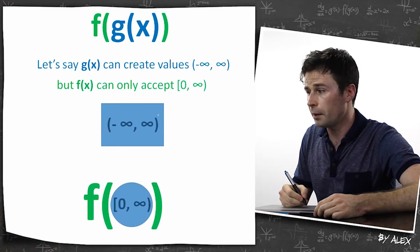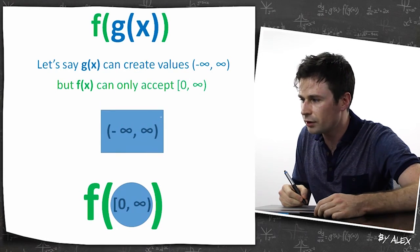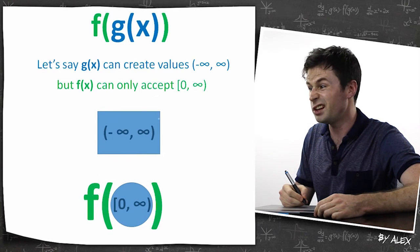But f of x can only accept 0 to infinity. So if we tried to chuck all these numbers into f of x, it would just sort of bounce out, it wouldn't fit in it properly.